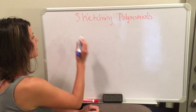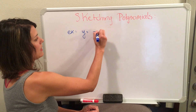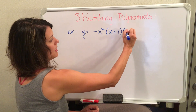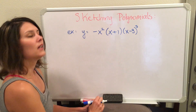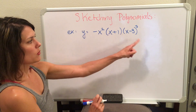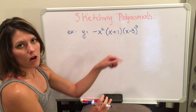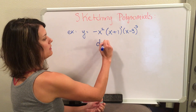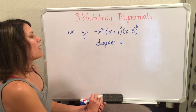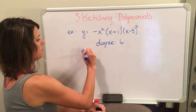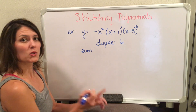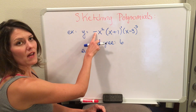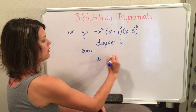Let's lead off with an example. Let's look at the polynomial: negative x squared, times (x plus one) to the first, times (x minus three) to the third power. The first thing I'm going to figure out is my degree. Since the polynomial is already factored, I add all my powers: two plus one plus three equals six. Six is even, which means the graph will go towards either positive or negative infinity on both ends. I see a negative leading coefficient, which means both ends are going to go down.